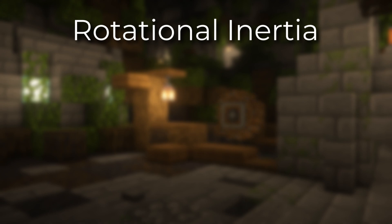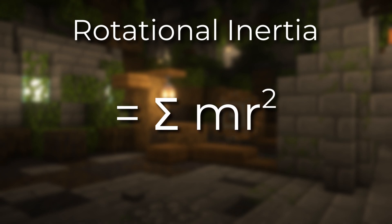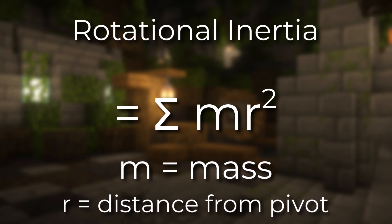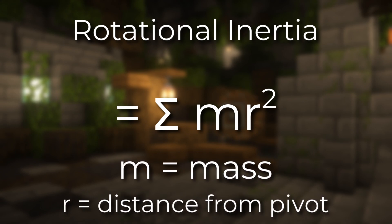More specifically, rotational inertia equals the summation of m times r squared, m being the mass and r being the radius from the pivot.